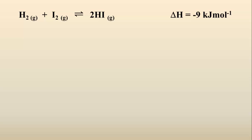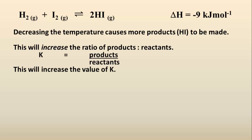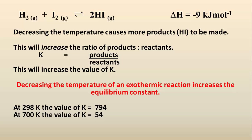How does decreasing the temperature affect the value of the equilibrium constant K? Decreasing the temperature of an exothermic reaction causes more products to be made. This will increase the ratio of products to reactants. Making the numerator of this ratio a large number will of course cause the value of K to become larger — there will be an overall increase of K. So lowering the temperature from 700 Kelvin to 298 Kelvin causes the equilibrium constant to increase from 54 to 794. This shows that more products are being made at a lower temperature, so the forward reaction must be exothermic.